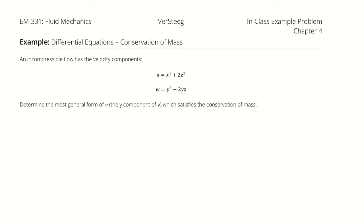An incompressible flow has the velocity components u equals x cubed plus 2z squared and w equals y cubed minus 2yz. I want to determine the most general form of the y component of the velocity vector which would satisfy the conservation of mass.